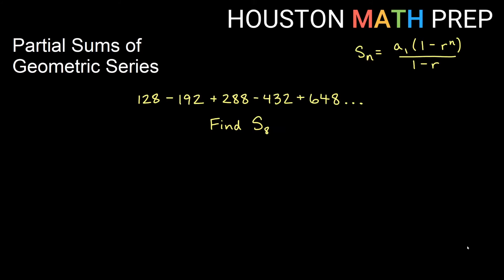Okay, let's look at another example here. I've got 128 minus 192 plus 288. So we have an alternating series going on here. We want to find the sum of the first 8 terms. The sum of the first 8 terms, I'm going to need to know my ratio for sure. I already know my a_1.